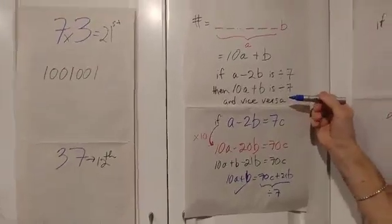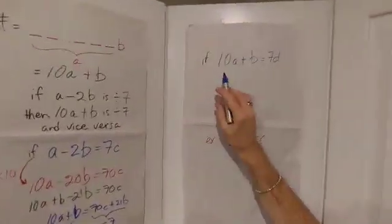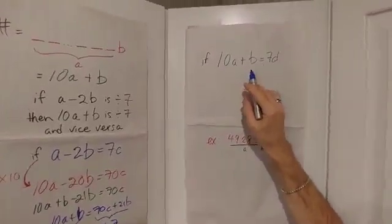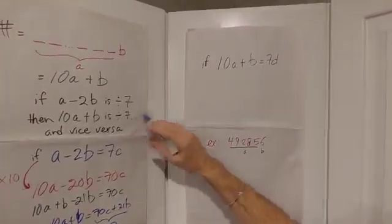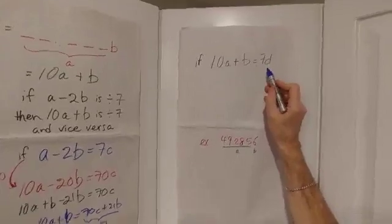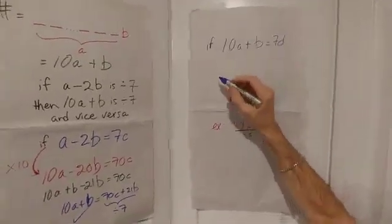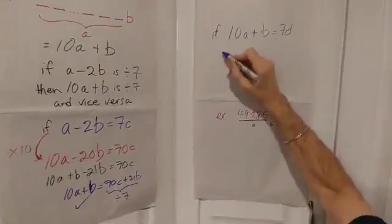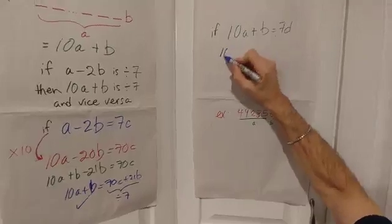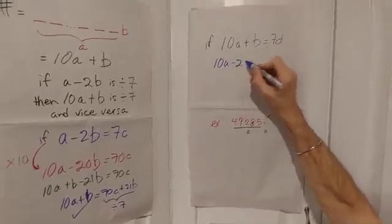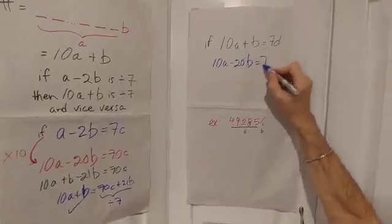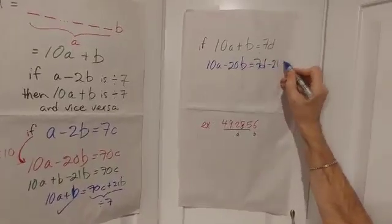Now let's go the other way around. Let's say we start with 10A plus B. If that's divisible by seven, like it says over here, then it must be seven times something. So now the trick I'm going to employ is I'm going to subtract 21B from both sides. So I'll get 10A minus 20B equals 7D minus 21B.